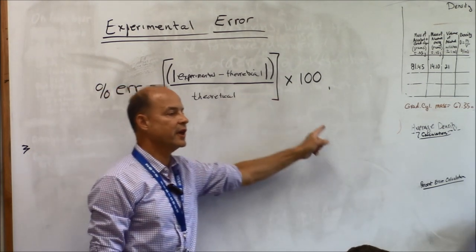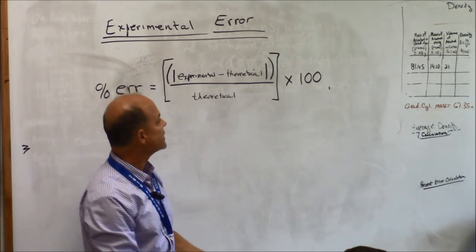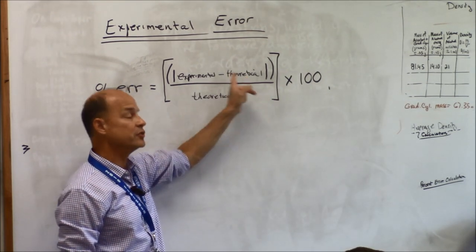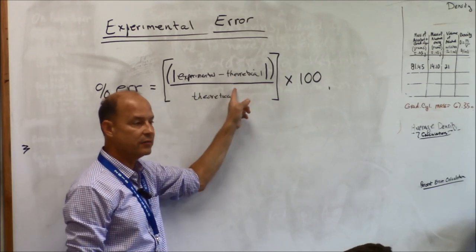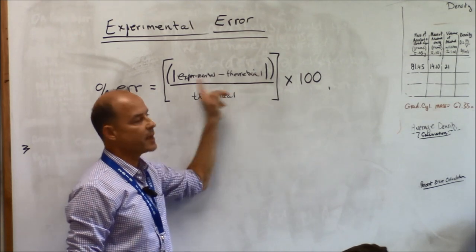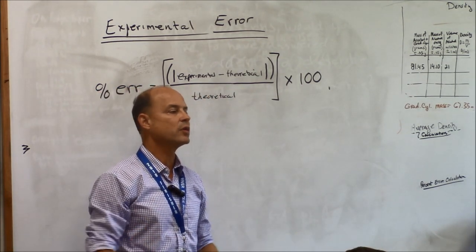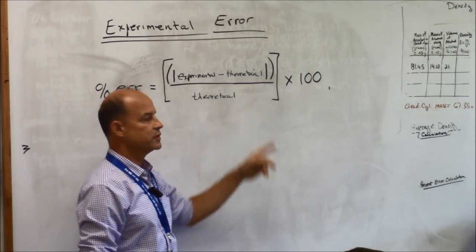If you do the calculation and you get a negative value, you'll probably go 'oh I'm supposed to take the absolute value of the numerator.' That's only going to happen if your theoretical value is larger than your experimental value. That'll cause this numerator to be negative, and all I'm saying by putting these absolute value brackets right here: it doesn't make any sense to have a negative number. Don't report a negative number.